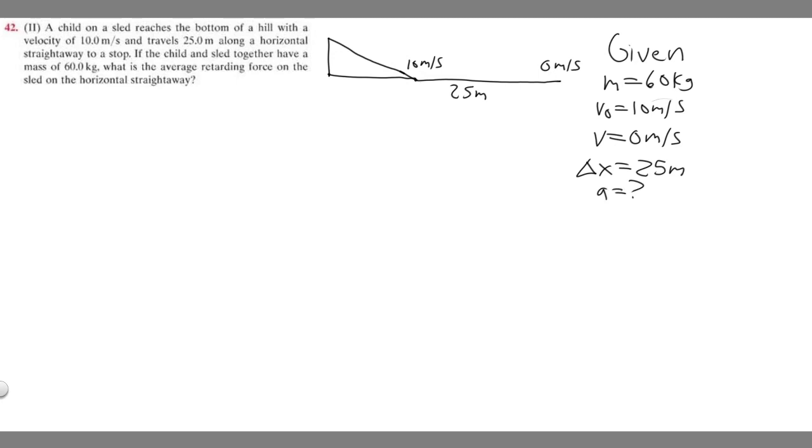So we're going to use a kinematic equation to solve this. I think the best one is v squared equals v sub 0 squared plus 2a times delta x, because this contains every single one of our variables: delta x, a which we're solving for, v sub 0 and v. So we're going to use this to solve. We just got to plug in every variable. So v squared is 0 equals v sub 0 squared, which is 10 squared. 10 squared is just 100 plus 2 times a times delta x, and delta x is 25. 2 times 25 is 50, so it's plus 50a.